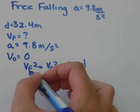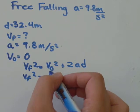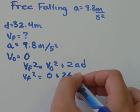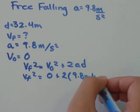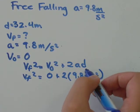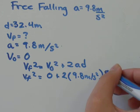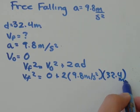So VF, that's what we're trying to find. V naught or VI, the initial velocity was zero, plus 2. A is the acceleration due to gravity, which is 9.8 meters per second squared, times the distance. Our stone fell 32.4 meters. So displacement is 32.4 meters.